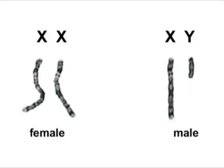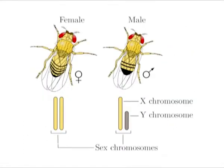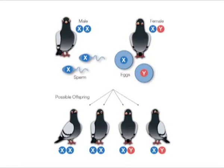In a normal animal there are two sex chromosomes, either XX or XY. In humans and insects, the female has two X chromosomes and the male has one X and one Y chromosome. But in birds, the male has two X chromosomes and the female has one X and one Y chromosome.